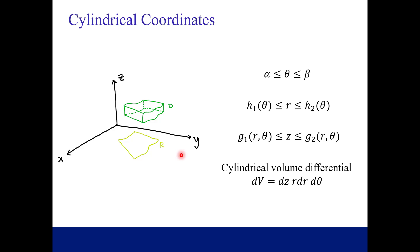Putting that all together, we have how to think about our coordinates — theta, r, and z. And then our differential for the volume of this region: dV in cylindrical coordinates is dz · r · dr · dθ. Remember, when you're in polar or cylindrical coordinates, you have this extra r when you convert from rectangular.